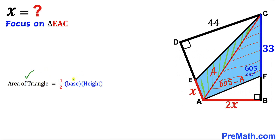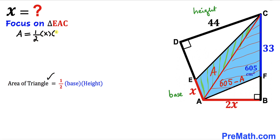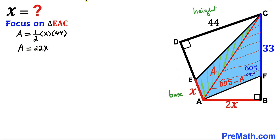Let's focus on triangle EAC and recall the area of a triangle formula: area equals one half times base times height. The base of triangle EAC is X and CD is the height, which is 44 centimeters. So area A equals one half times X times 44, which simplifies to A = 22X. This is equation number one.